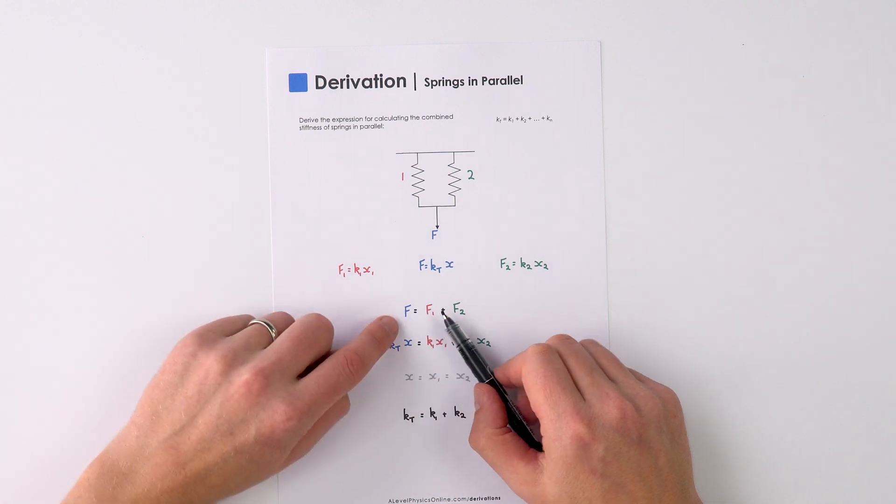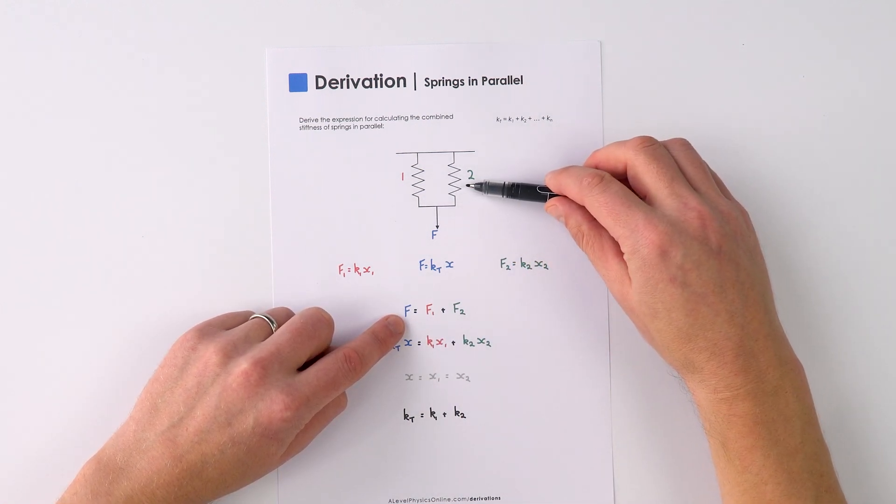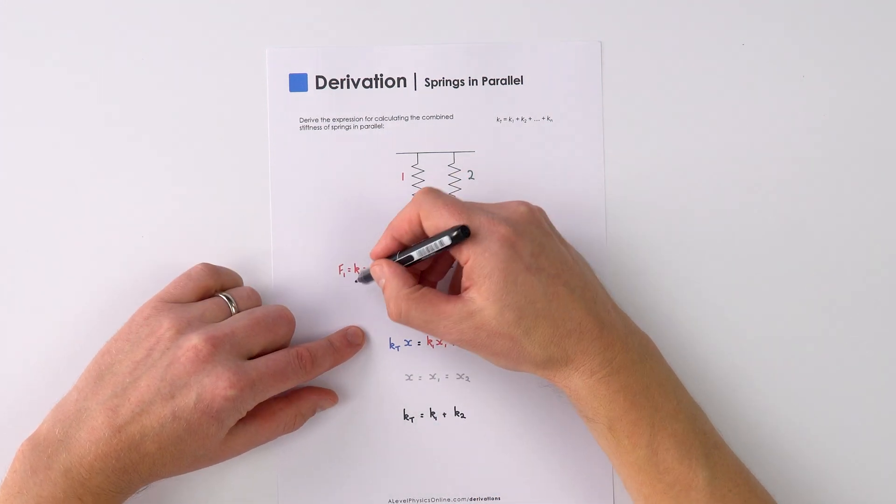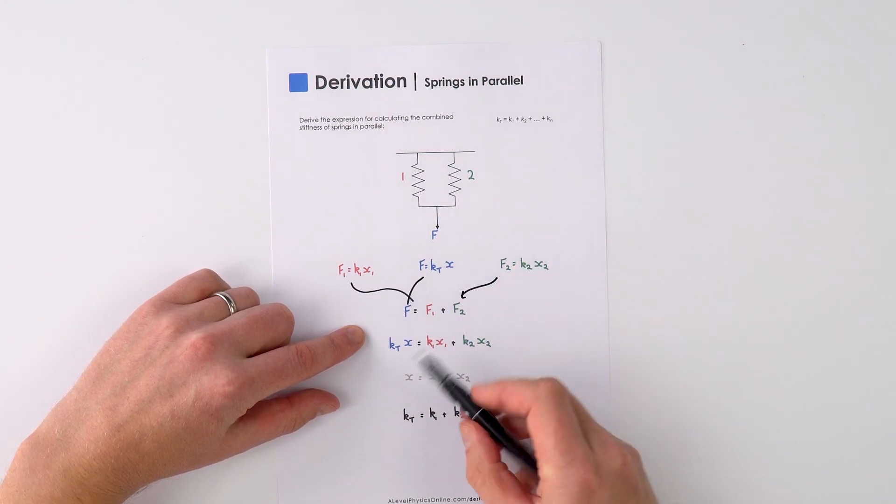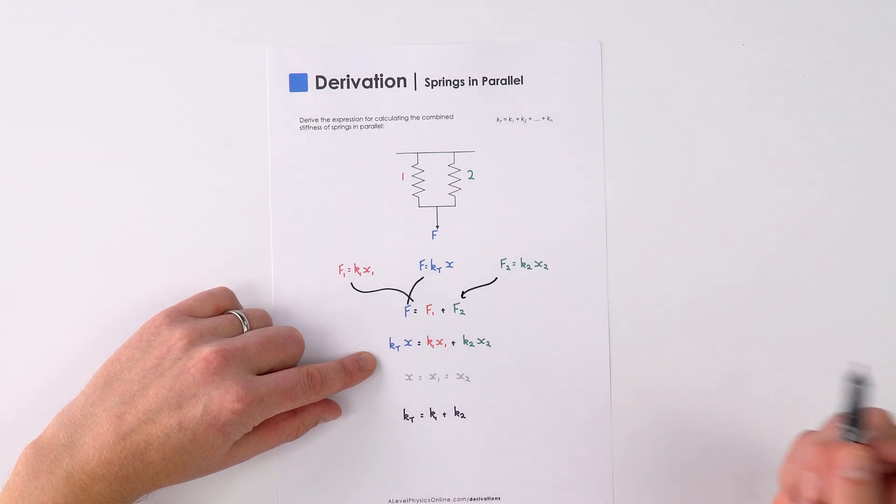Now this force is going to be equal to the force applied at one plus the force applied at two. So we can say that F equals F1 plus F2. We can then substitute these back in like this and therefore we can say that KTX is equal to K1 X1 plus K2 X2.